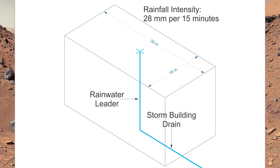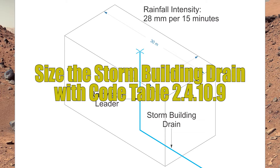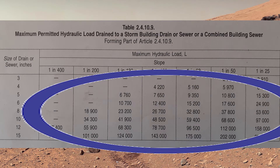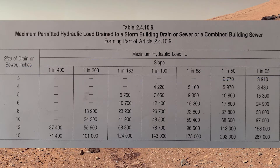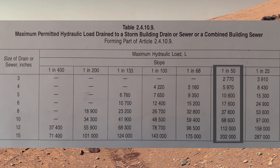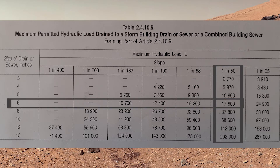As the rainwater leader travels down, it's going to turn a hard right to a horizontal pipe that we call the storm building drain. We'll need to reference table 2-4-10-9 to size that. We're going to see a whole bunch of liter values and a bunch of slopes, so I need to know the slope or grade of the pipe. I select 1 in 50, which is about quarter inch per foot, and go down the list. I notice there's 10,800 or 17,600 — 10,800 is not enough, so I go to 17,600, go across to the left, and find out the size of my storm building drain needs to be six inches.